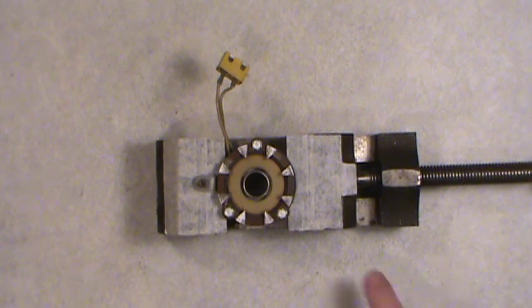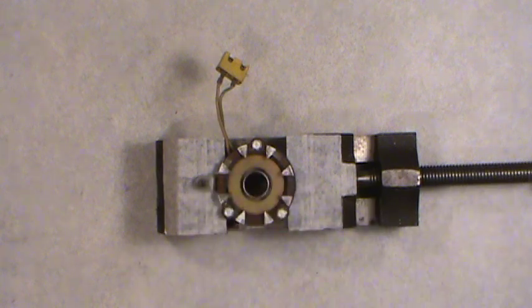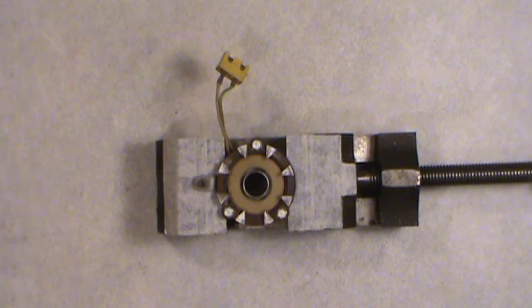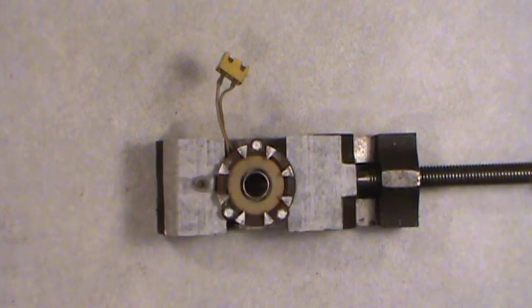The only nice thing about a distributor for these things is they're only turning half the speed of the engine crankshaft. So if you're turning 6,000 RPM then you're only going 3,000 RPM with this one.